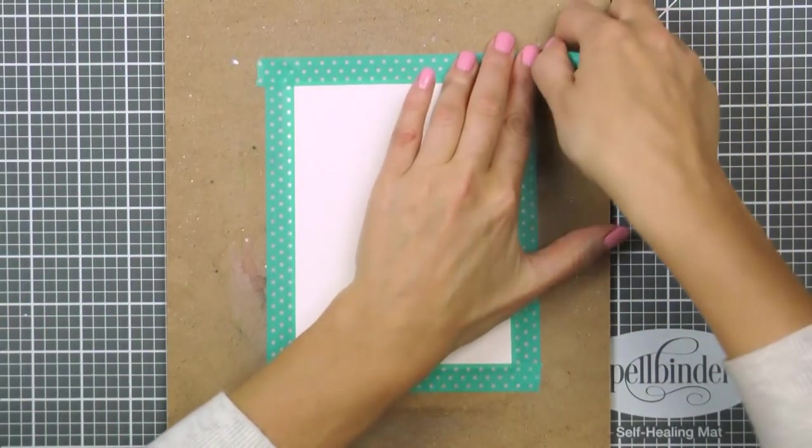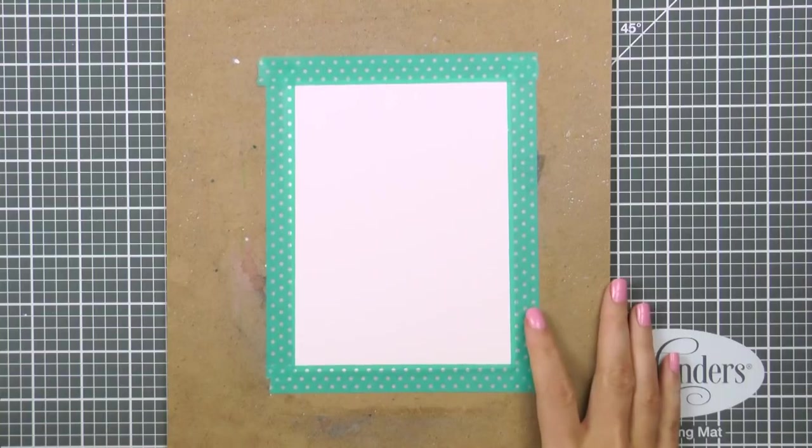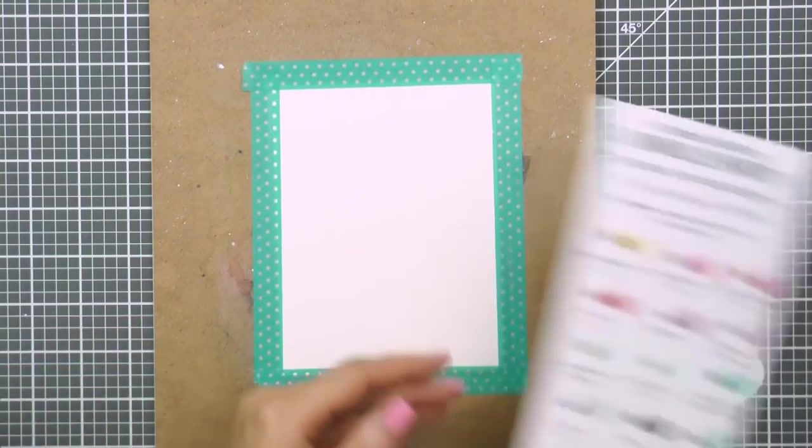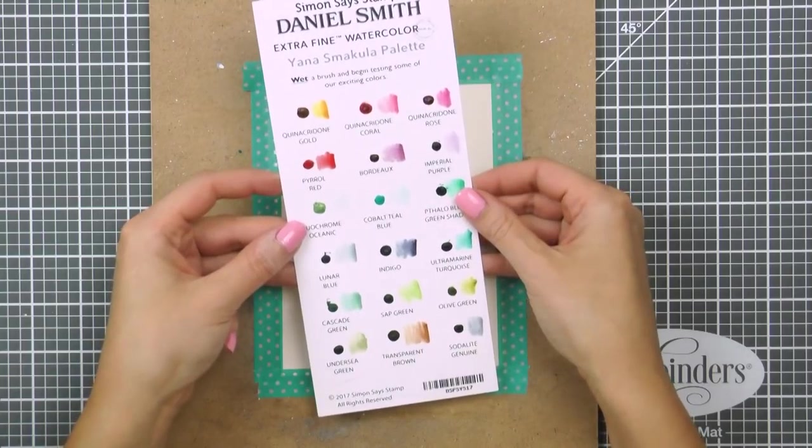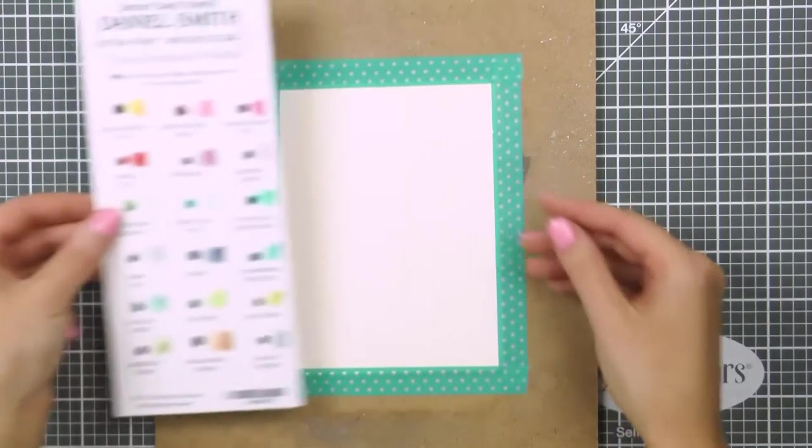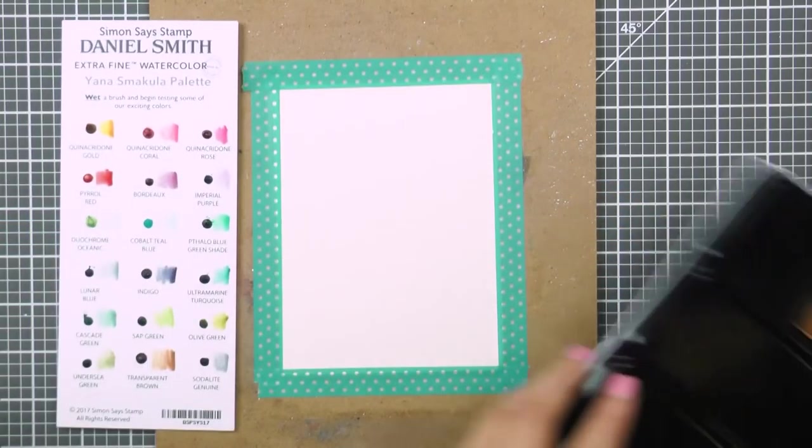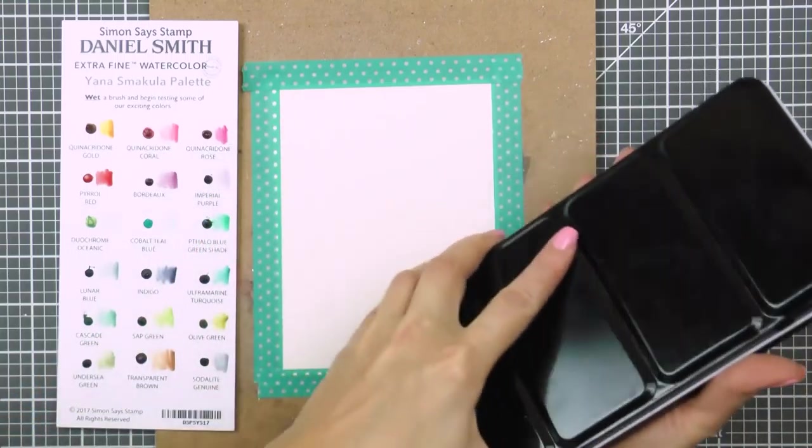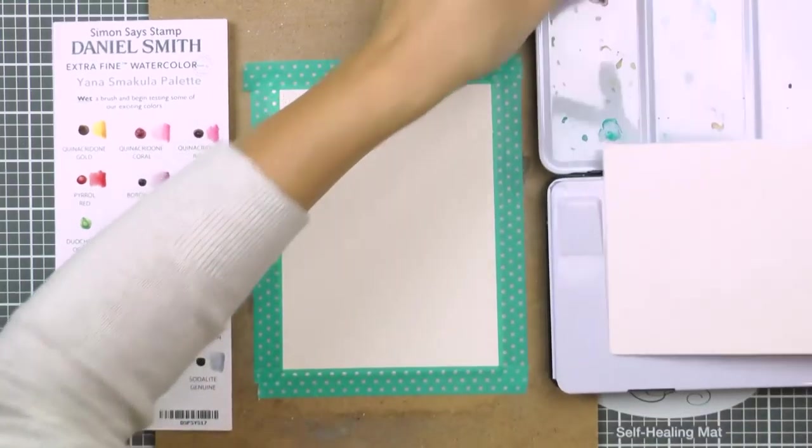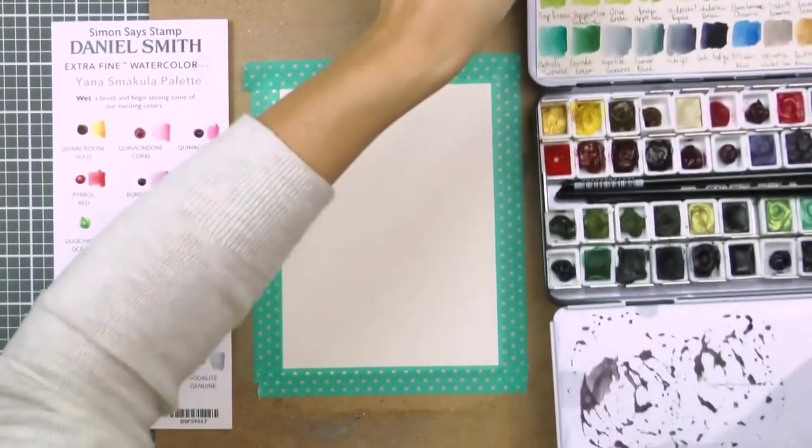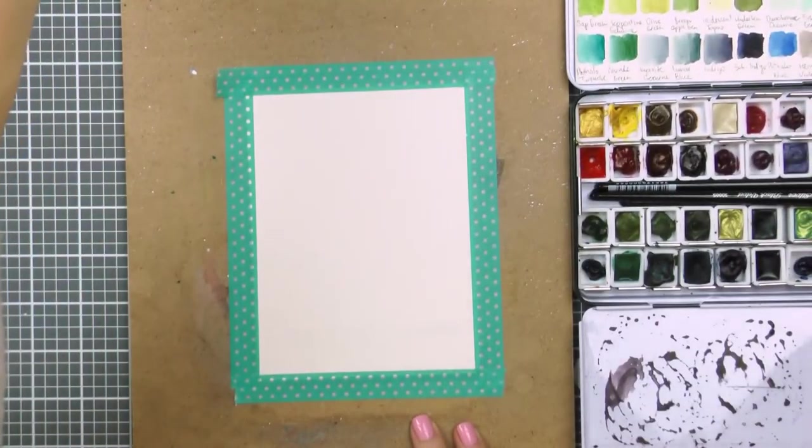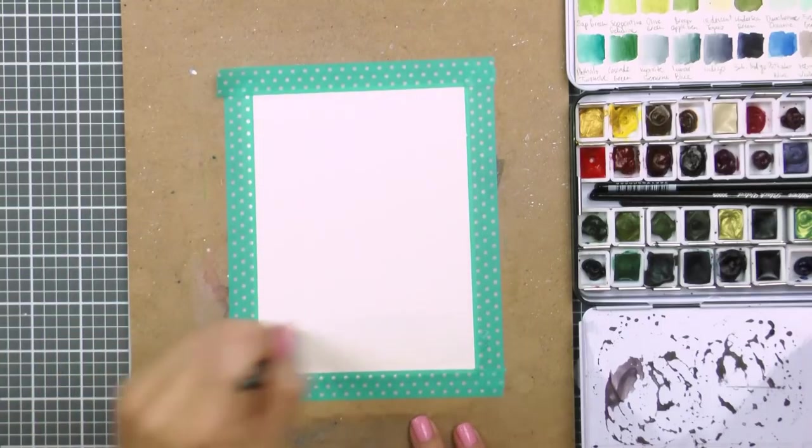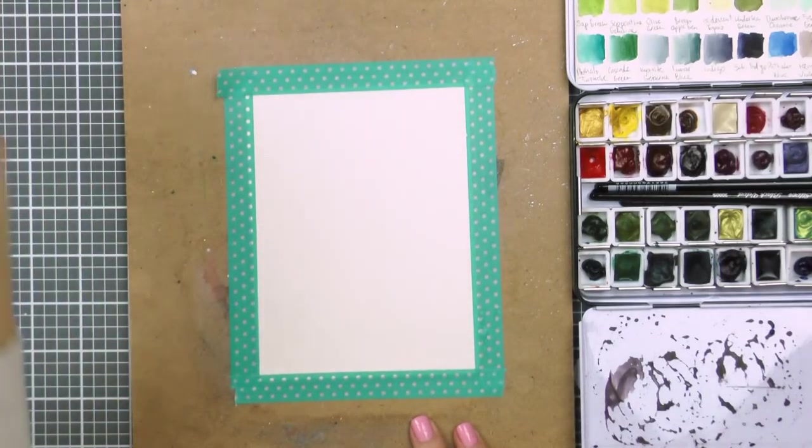To paint my galaxy I'm going to use Daniel Smith watercolors. Here I have an exclusive Daniel Smith watercolor dot chart. This chart features 18 of my favorite colors to color with and I'm going to use several colors from here to paint the galaxy. Indigo, Lunar Blue and Ultramarine Turquoise. I have my watercolors set up in a palette so I'm going to use them from there, but you can also use watercolors from the dot chart. There's enough watercolor there to paint a background like this.